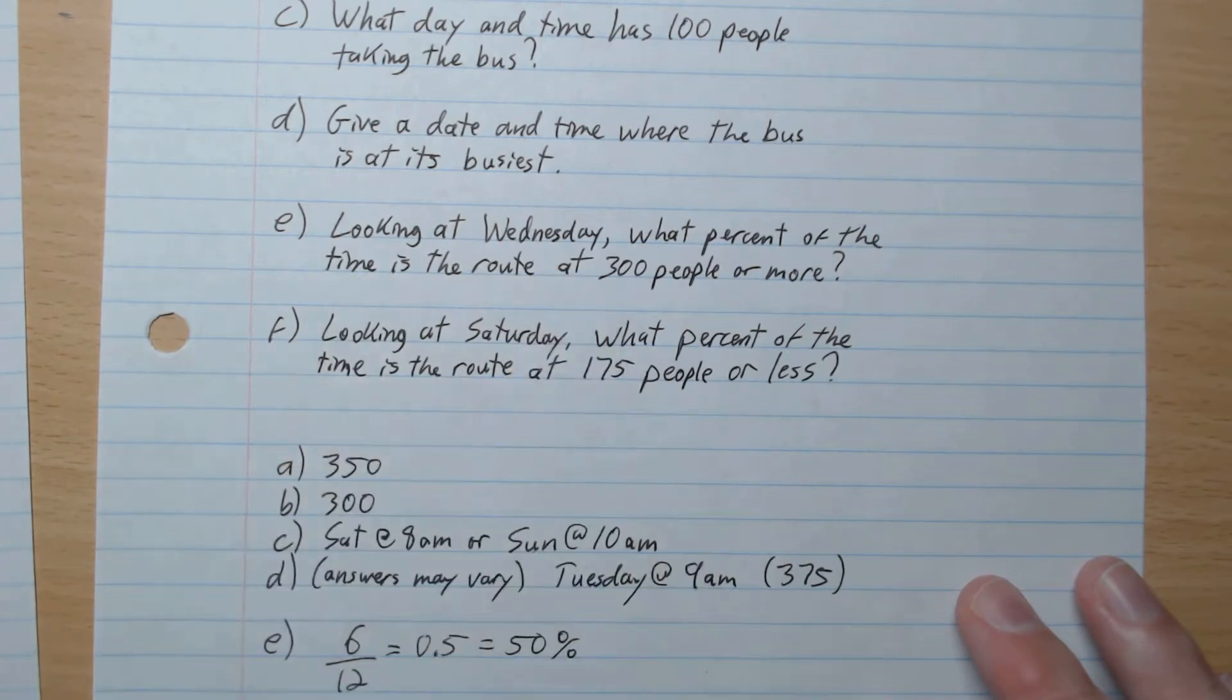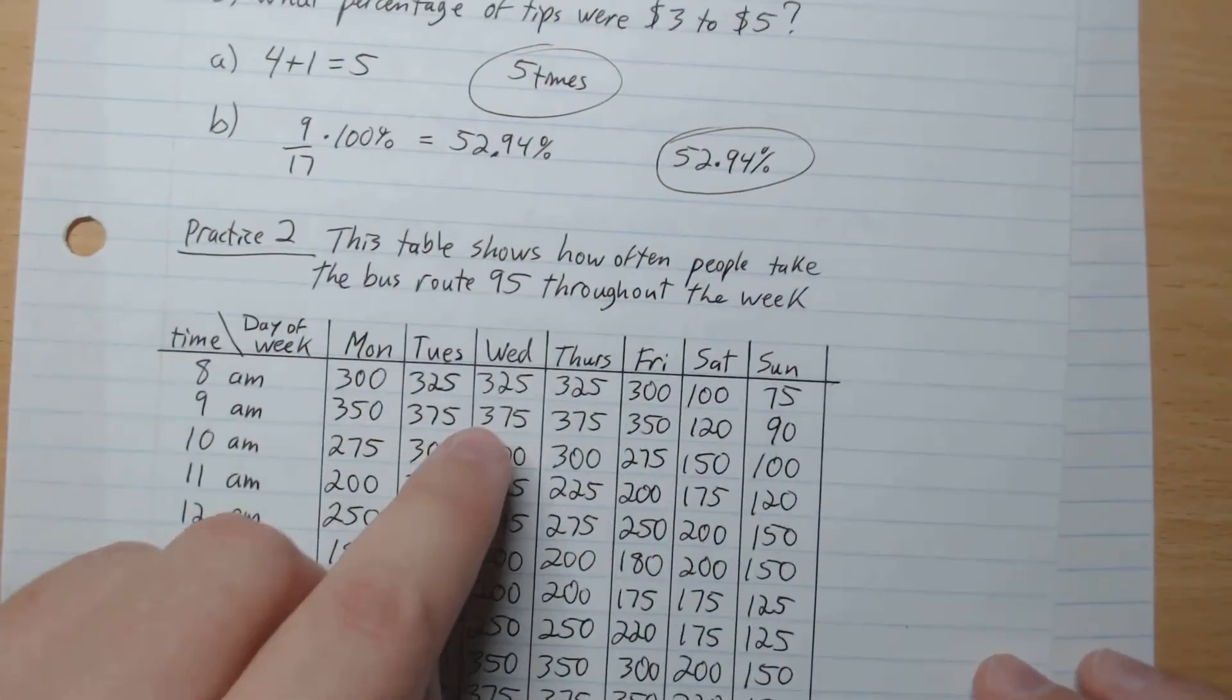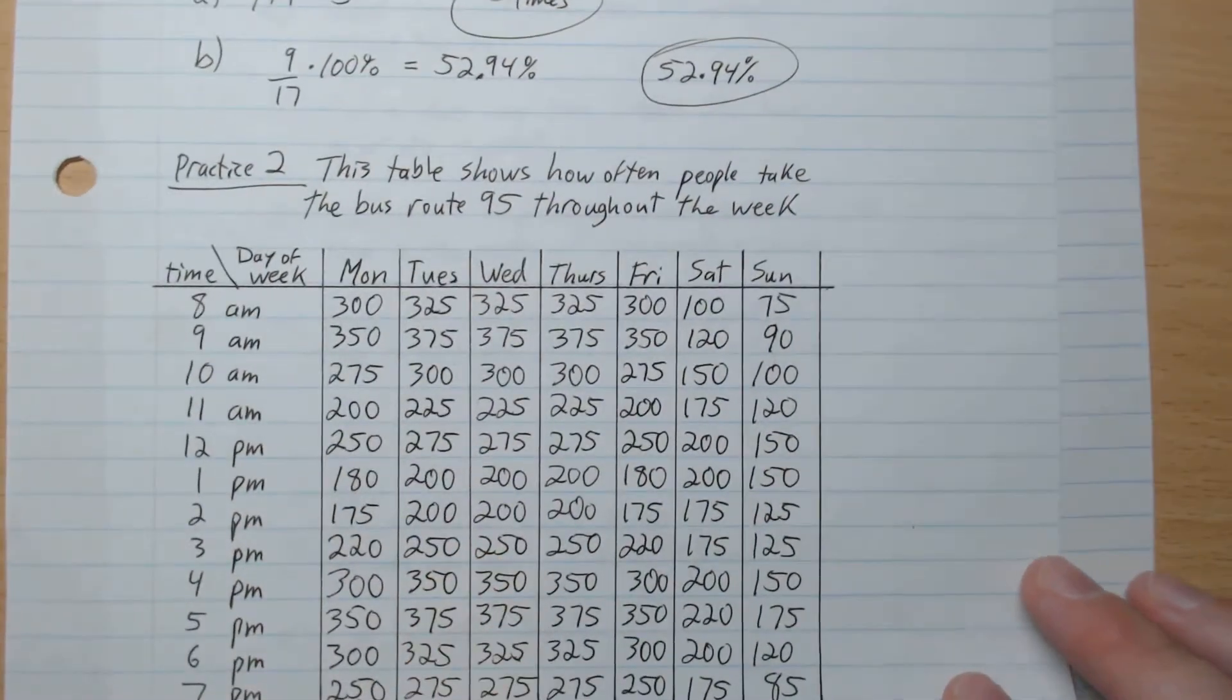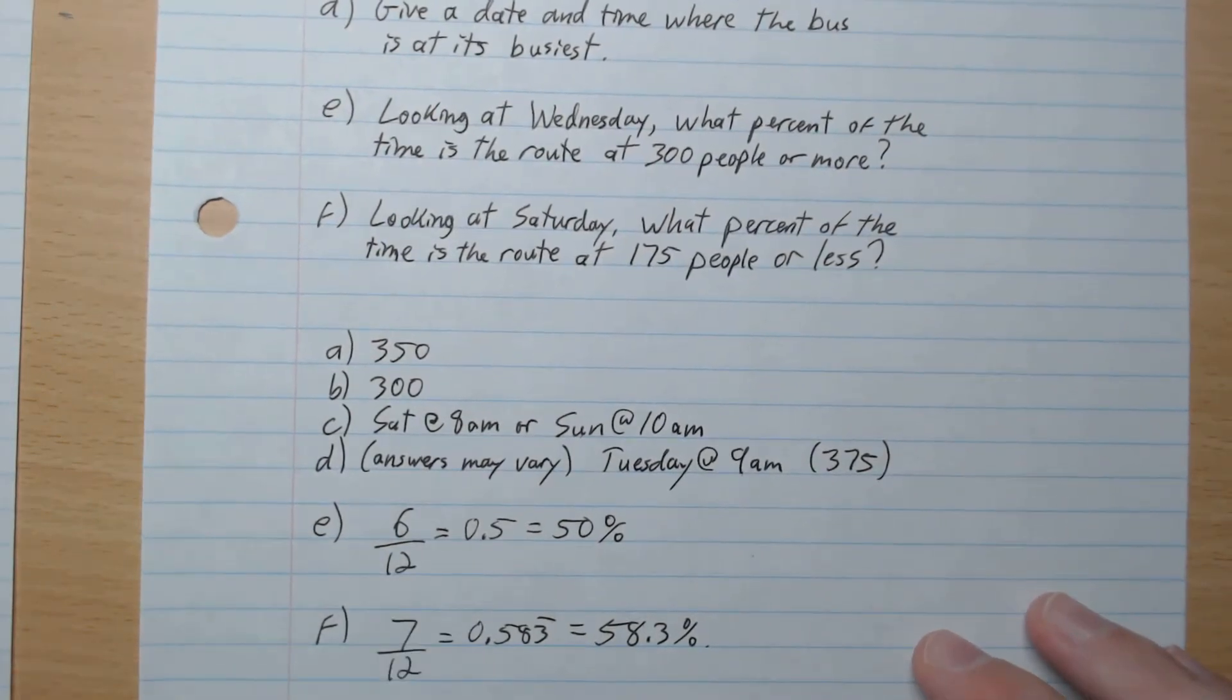E, looking at Wednesday, what percent of the time is the route at 300 or more? So we look at Wednesday, and we look for how many times 300 appears. It appears six times out of 12. And so it's 300 or more, 50% of the time.